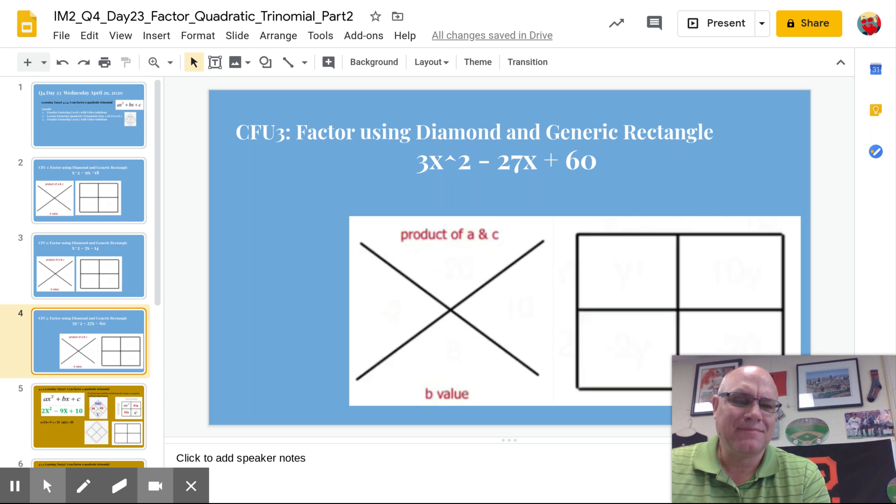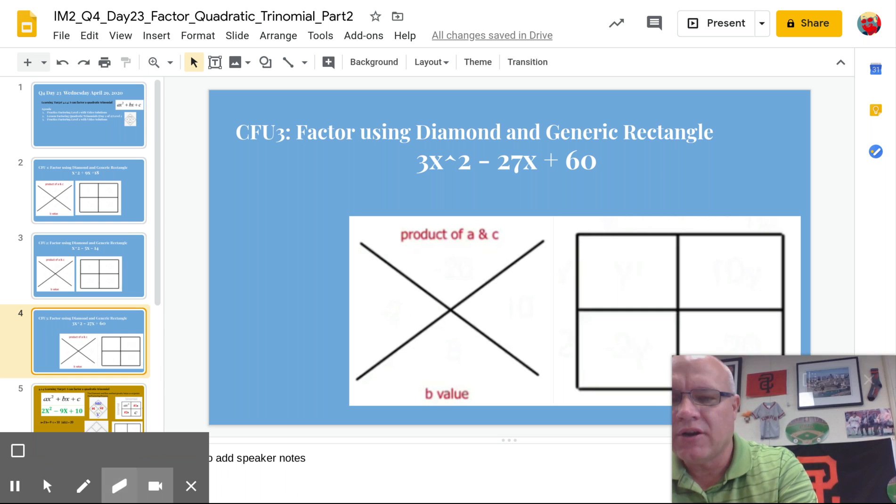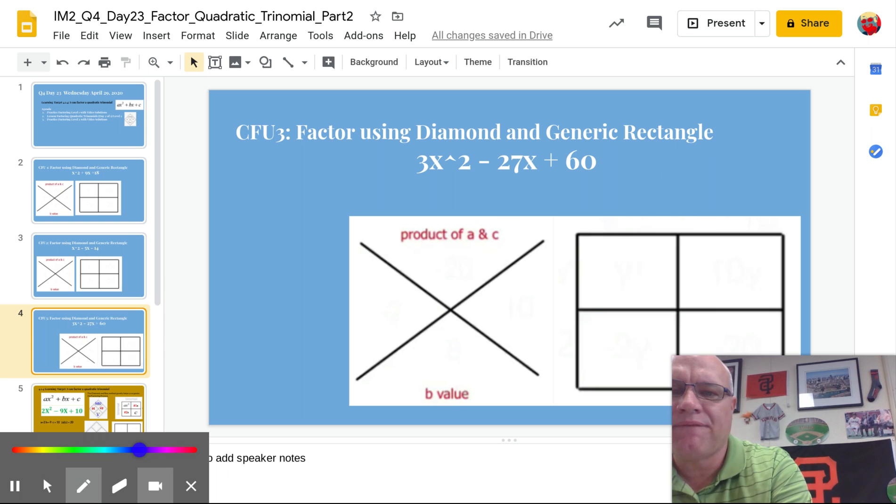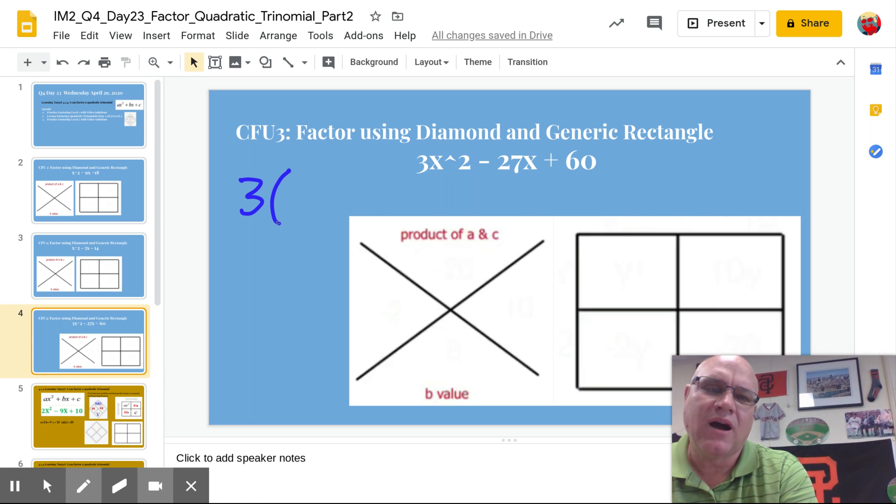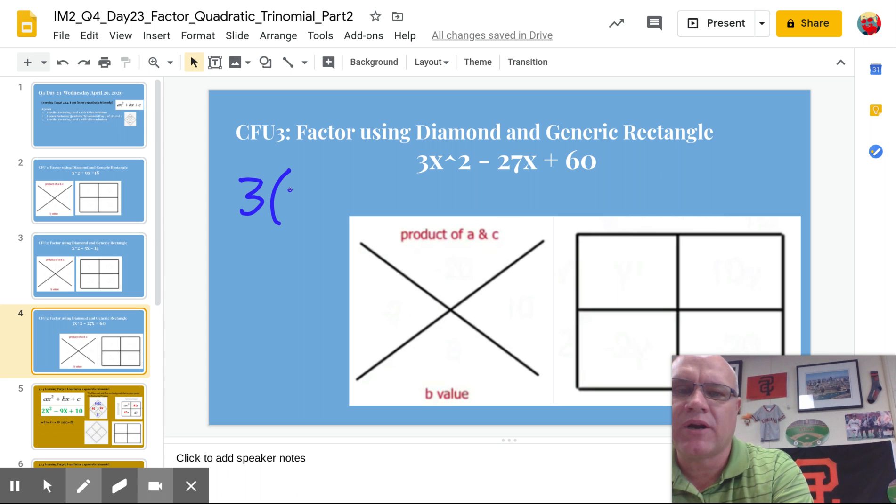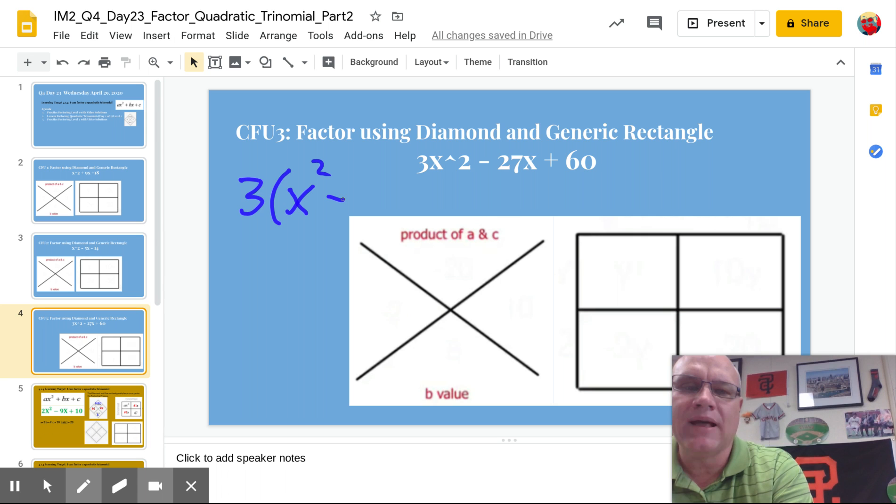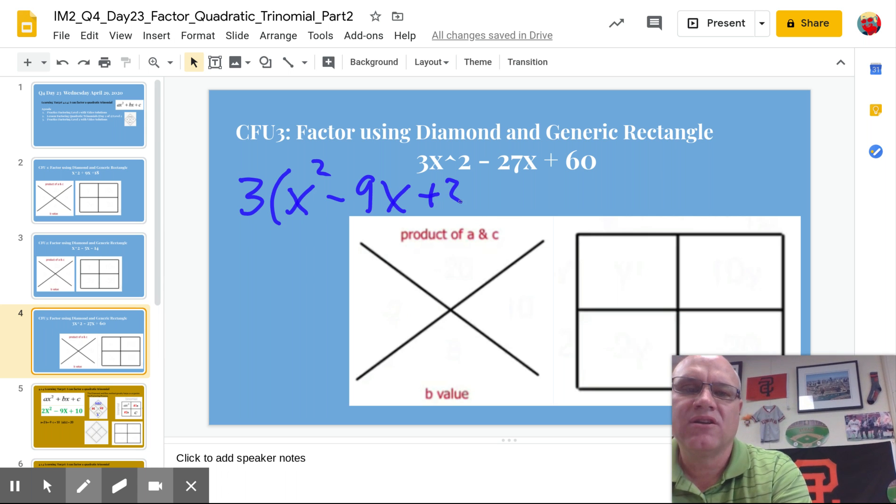But is it? Why do I say that? Well, you always have to look for the greatest common factor first. So this one is a classic. It has a common factor, which is going to be the 3. So we have to pull out the greatest common factor, 3 parentheses. All right, 3 times what's 3x squared? 3 times 1x squared minus 9x plus 20.